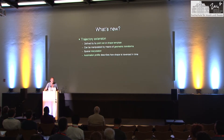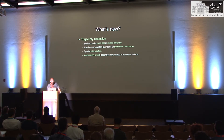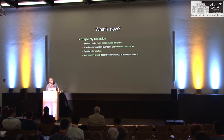The trajectory extension is the most important one. A trajectory is defined by a point set, or it could be defined by a shape template describing the spatial shape of the trajectory. This shape can then be manipulated by means of geometric transforms. It also depends on spatial interpolation. In addition, you need to describe how you are traversing this trajectory — that's an automation profile.